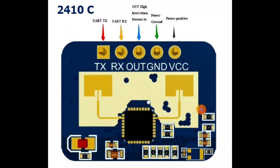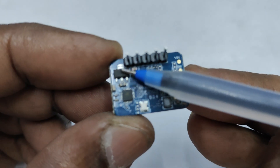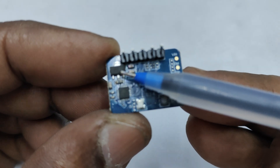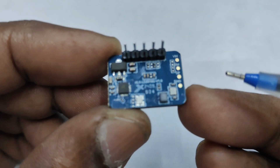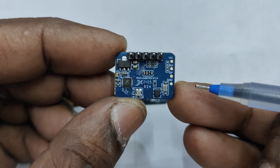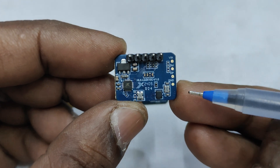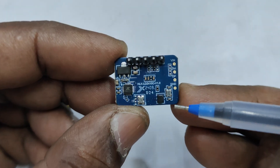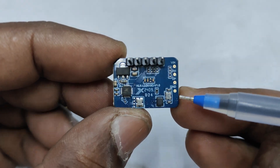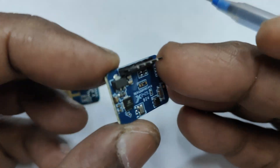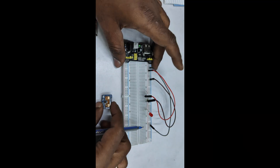The 2410C has UART pins — TX, RX — along with a GPOUT pin and power supply pins. It has a built-in 3.3 volt regulator, so you can safely supply 5 volts.